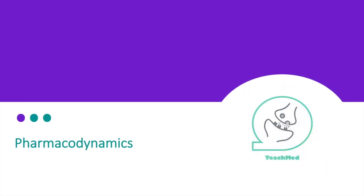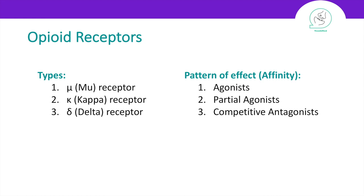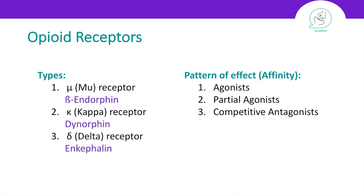Let's get started with the pharmacodynamics of opioids. Opioid receptors are distributed throughout your body. There are three types of receptors: mu, kappa, and delta receptors. When an opioid binds to the receptor it exerts different effects depending on the affinity — it can be an agonist, which means activating the receptor, a partial agonist, or an antagonist where it does not activate the receptor. Examples of endogenous opioids include beta-endorphin binding to the mu receptor, dynorphin binding to the kappa receptor, and enkephalin binding to the delta receptor.